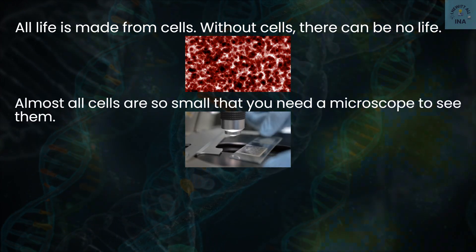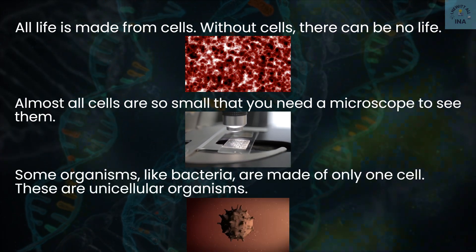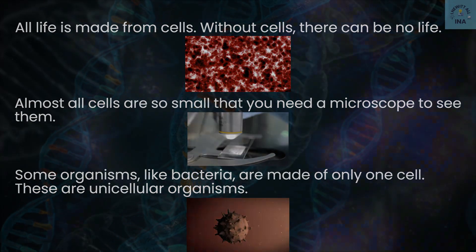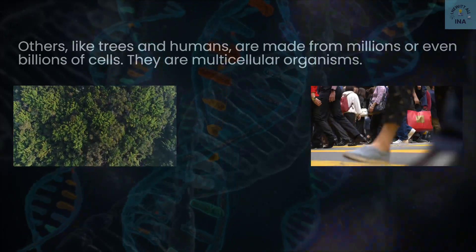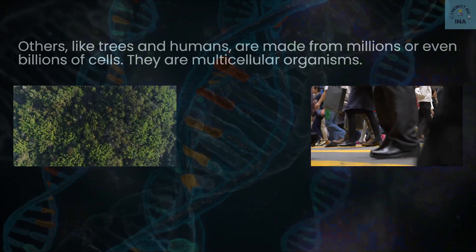Some organisms like bacteria are made of only one cell. These are unicellular organisms. Others like trees and humans are made from millions or even billions of cells. They are multicellular organisms.